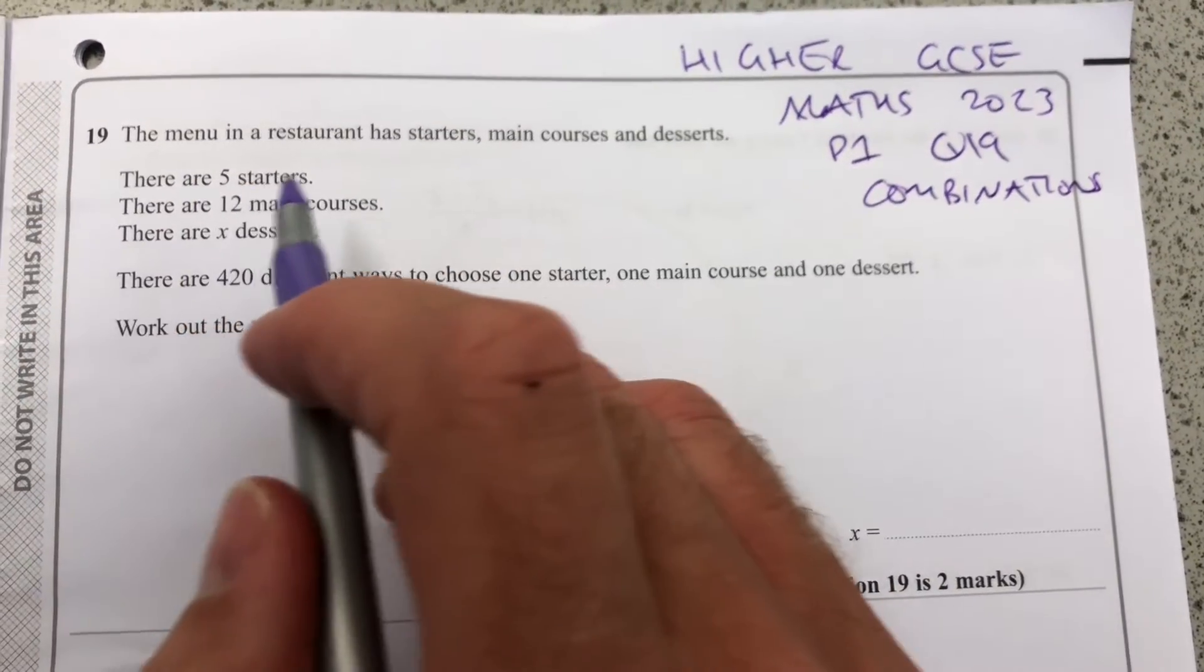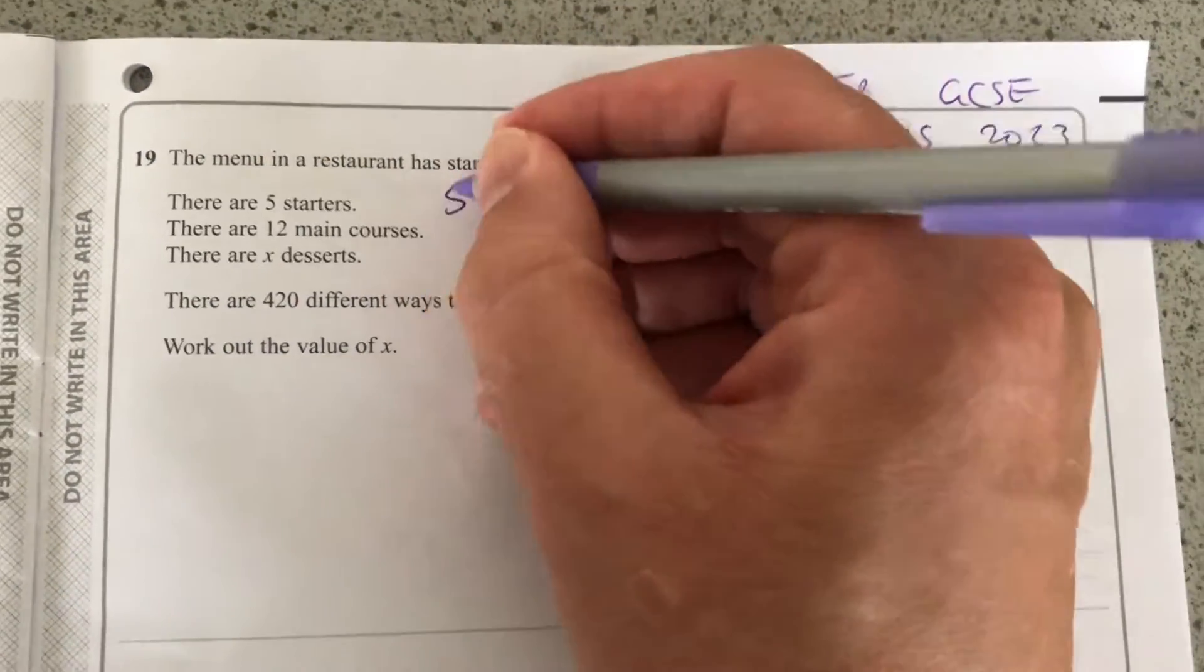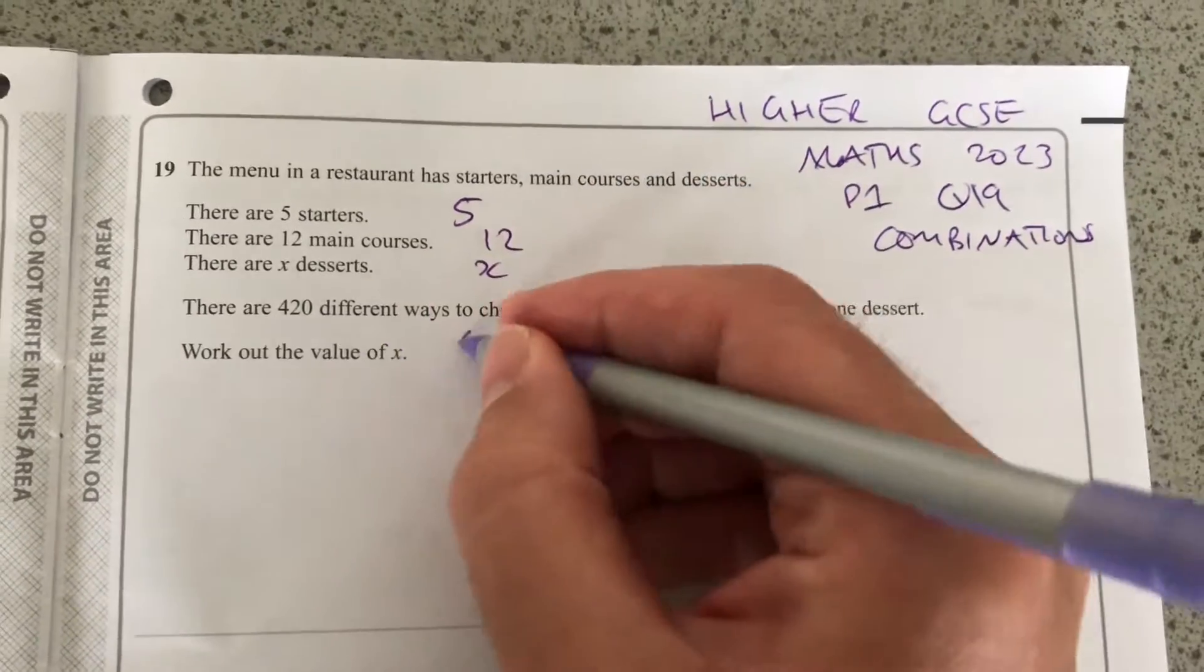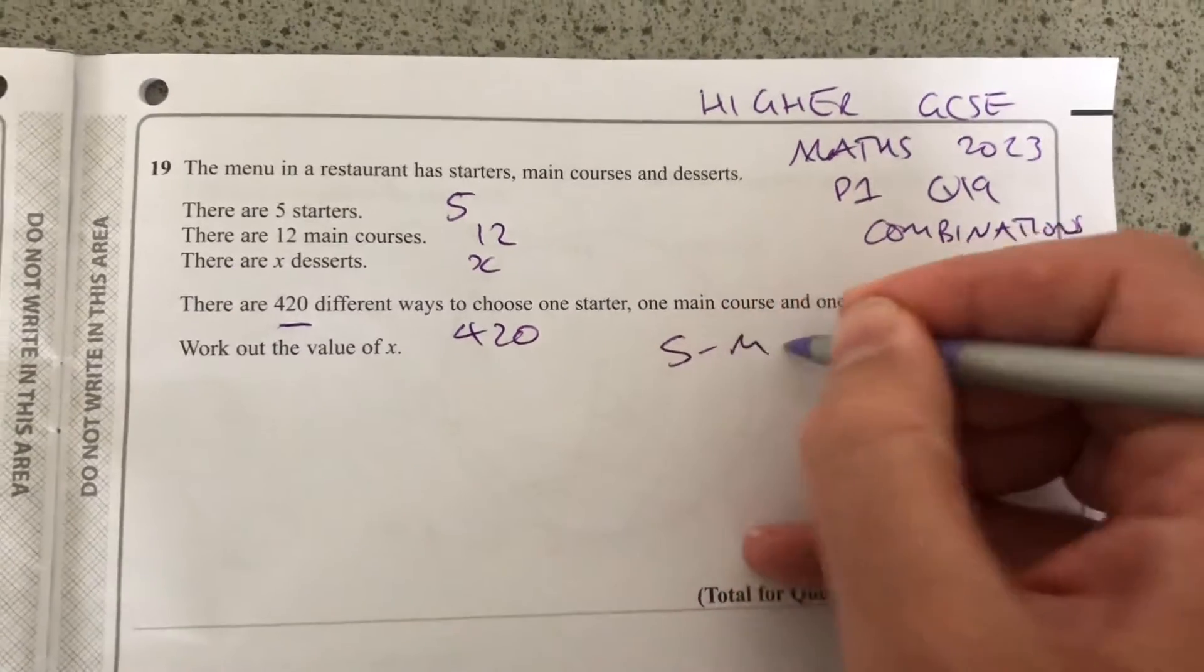It says here, a menu in a restaurant has starters, main courses, and desserts. 5 starters, 12 main courses, and x desserts. And there are 420 different ways to choose starter, main, and dessert.